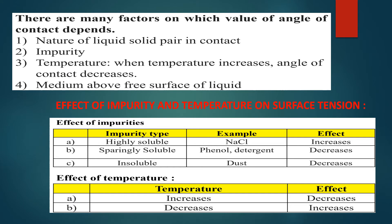The value of the angle of contact depends on various factors like the nature of the liquid and solid in contact, impurities present in the liquid, and the temperature of the liquid. Any increase in temperature decreases the angle of contact. It also depends on the medium above the free surface of the liquid. Regarding the effect of impurity on surface tension: when a soluble substance such as common salt is dissolved in water, the surface tension of water increases. When a sparingly soluble substance such as phenol or detergent is mixed with water, surface tension decreases. When an insoluble impurity like dust is added to water, surface tension also decreases.